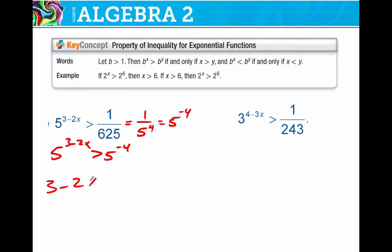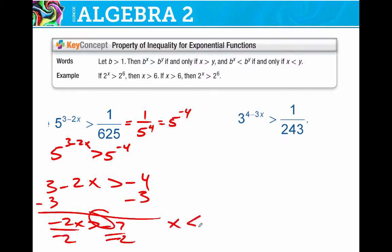3 minus 2x is greater than negative 4. Now you've got to watch out. I'm going to end up dividing by a negative here, aren't I? And I get negative 7. And divide by a negative and divide by a negative. You've got to flip the sign. x is less than 7 over 2 or 3 and a half.